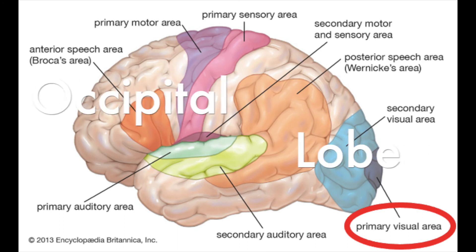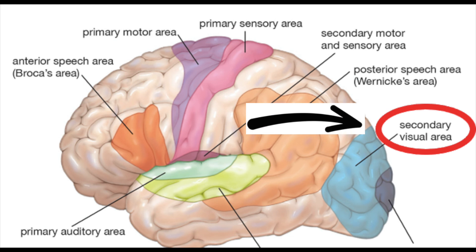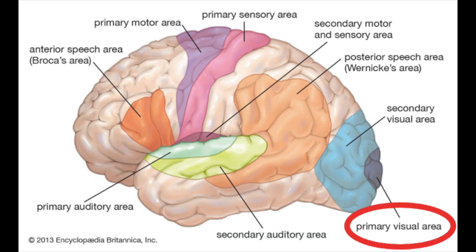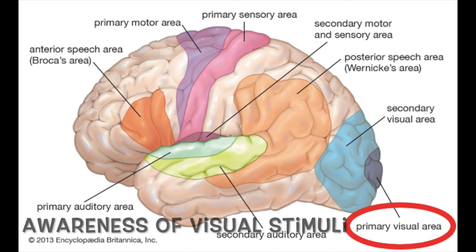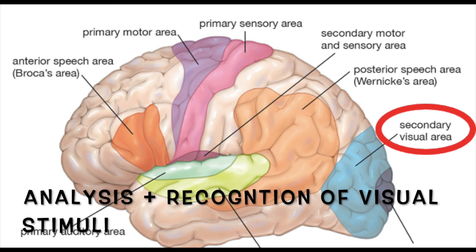Last but not least, the occipital lobe has two main areas to know. The primary visual cortex deals with awareness of visual stimuli. The visual association cortex deals with the analysis and recognition of those visual stimuli by comparing them to old memory, allowing you to identify color — is it red, blue, orange, or green? Shape — is it round, oval, or square? And size — is it big, small, medium, micro, or macro?